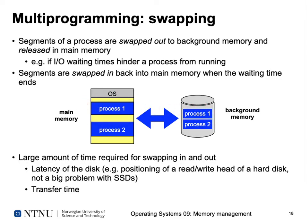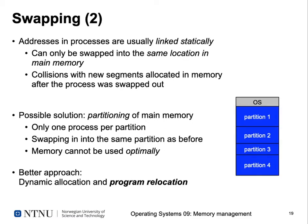When we perform swapping there is an additional problem: addresses in processes, if you don't take special precautions, are usually statically linked, meaning addresses are fixed. If your program ran at address 1000 and accessed data at address 1100 and 1200, those addresses are fixed. If we move the program to a different address we would access the wrong data or jump to the wrong subroutines, so with a simple approach we can only swap a process back into the exact same memory location.